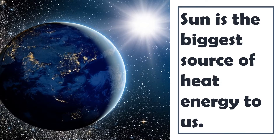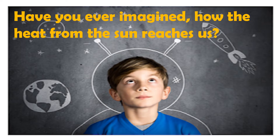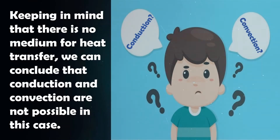We all know that the Sun is the biggest source of heat energy to us. But have you ever imagined how heat from the Sun reaches us — by conduction or by convection? Keeping in mind that there is no medium for heat transfer in most of the space between Earth and the Sun, we can conclude that conduction and convection are not possible in this case.